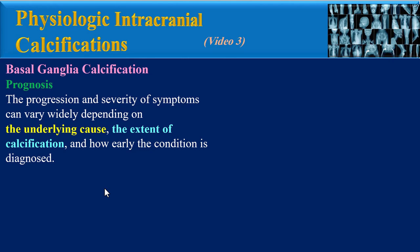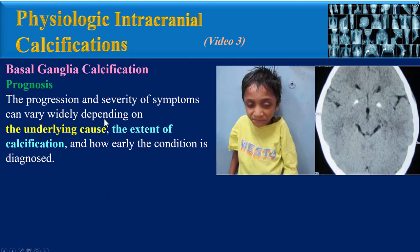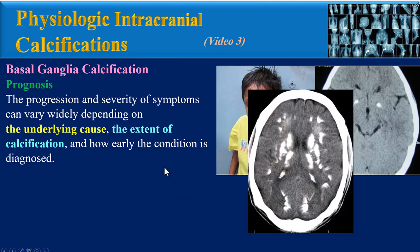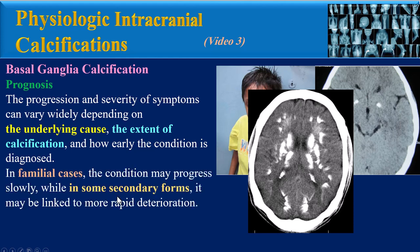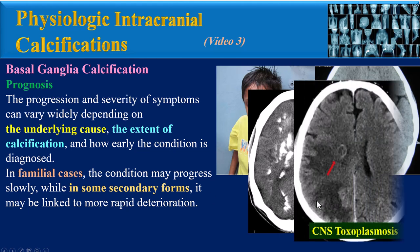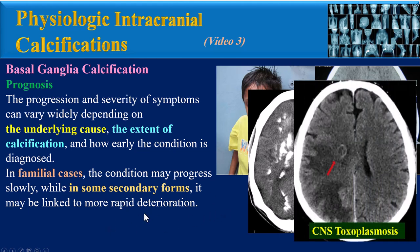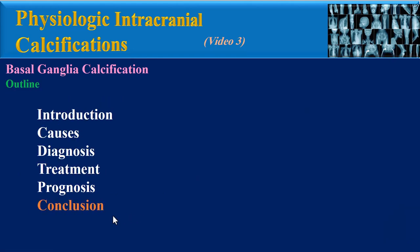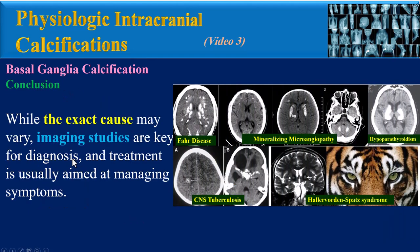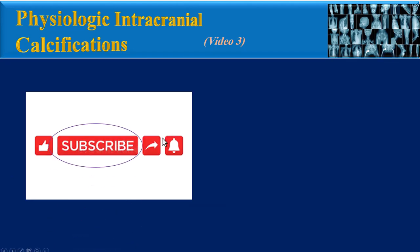The prognosis — progression and severity of symptoms can vary widely depending on the underlying cause, the extent of calcification, and how early the condition is diagnosed. In familial cases the condition may progress slowly, while in some secondary forms it may be linked to more rapid deterioration. In conclusion, while the exact cause may vary, imaging studies are key for diagnosis, and treatment is usually aimed at managing symptoms.